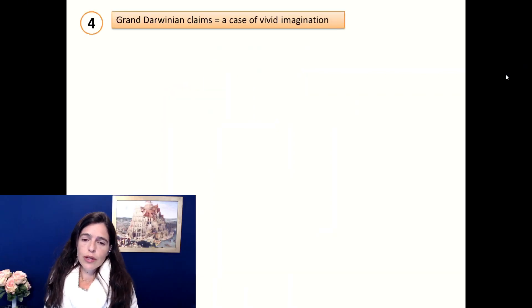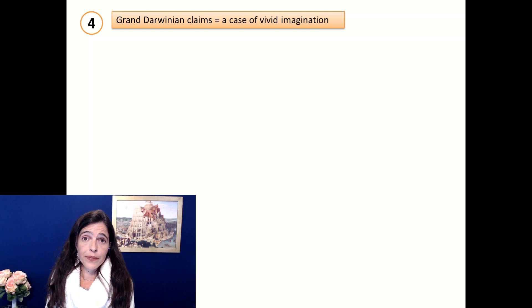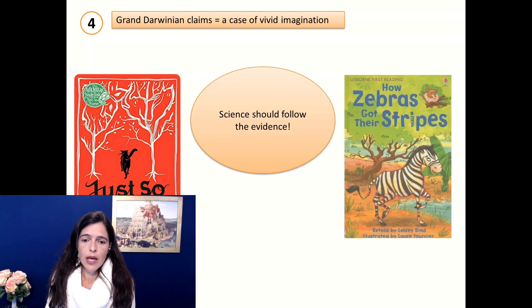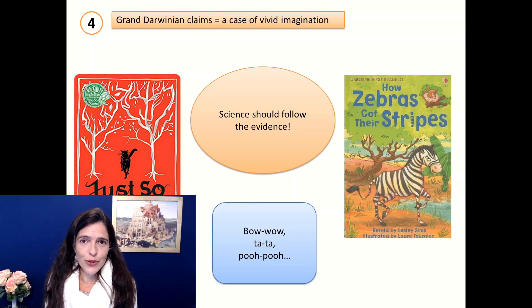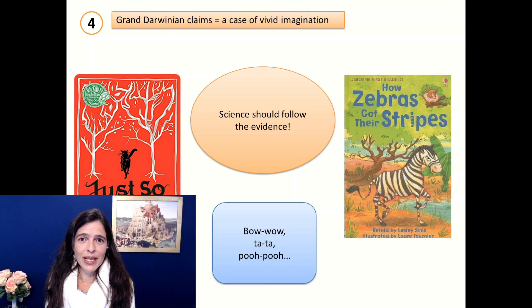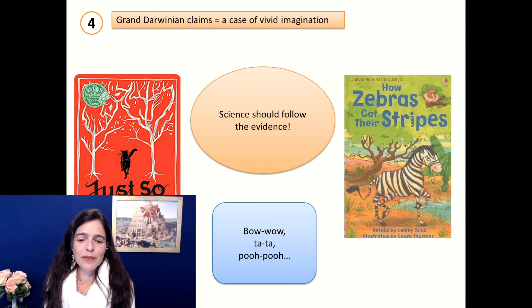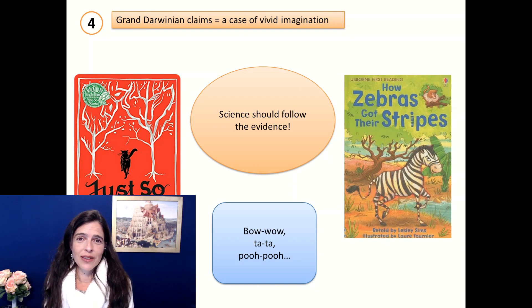Number four was essentially pure imagination — basically fairy stories — how Darwin described evolution, and we're going to talk about that in a future video. There are many funny theories of how language evolved, called bao-bao, tata, poo-poo, etc. And you'll see that even at the time of Darwin, some people made fun of the simplicity of his theory.